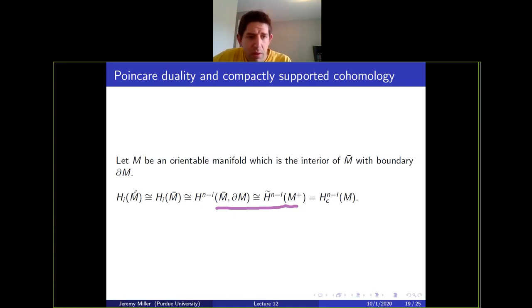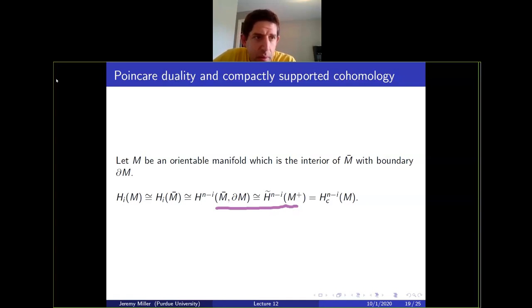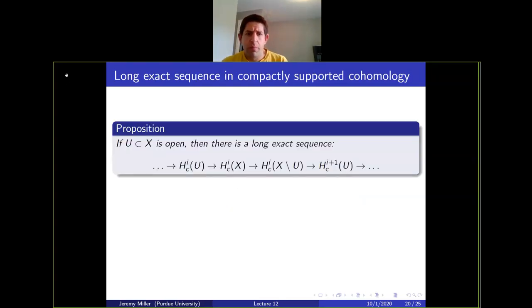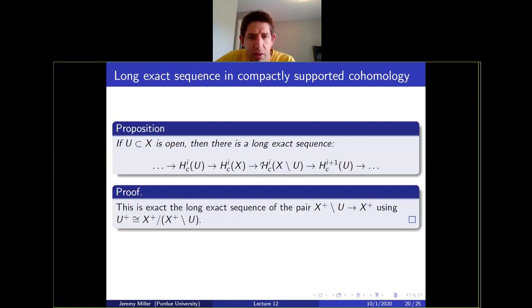One nice property of compactly supported cohomology: if U is an open subset of X, there's a long exact sequence involving the compactly supported cohomology of X, of U, and of the complement X minus U. This is just a long exact sequence of a pair rephrased in terms of compactly supported cohomology.